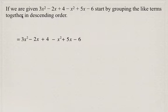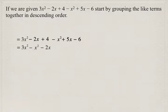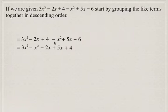So the first terms, the highest exponents, are the x squareds, so we group those together: 3x squared and negative x squared. The next highest exponent is 1, so we write minus 2x plus 5x, and then our constants — plus 4 and minus 6.